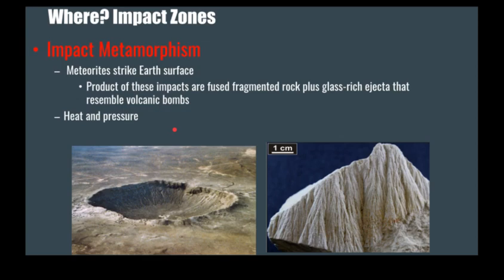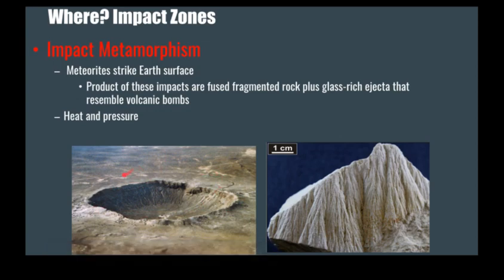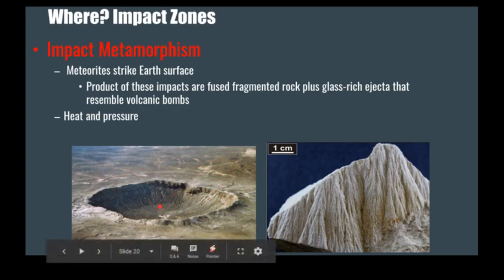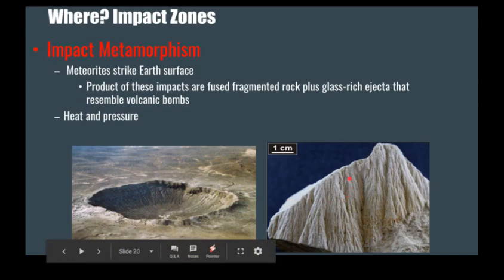A cool side note on where metamorphism could potentially happen is impact craters. This is not an extremely common area of metamorphism on our planet, but it's definitely interesting nonetheless. Here's a large crater in Arizona created by an impact. As a meteorite strikes the planet, it creates very intense amounts of pressure in an instant, and you can create things like shatter cones. Shocked quartz is another common thing that geologists look for — quartz that has been altered by this kind of impact.